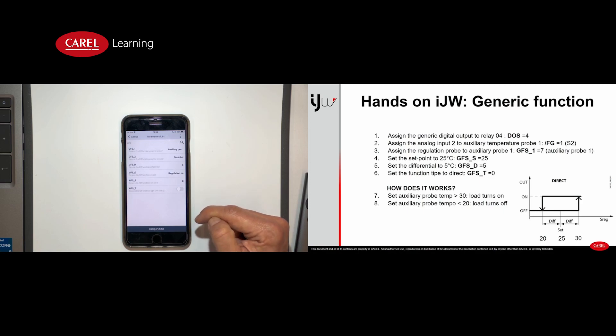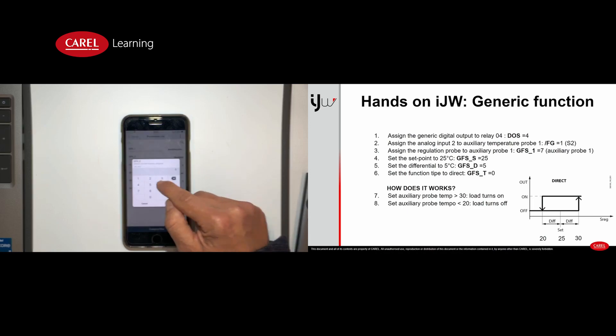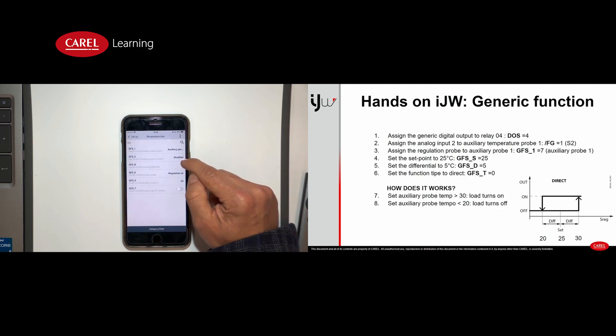The second parameter that we have to set is the set point. Let's say in this case 25 degrees. Also we have a differential, for example of 5 degrees.